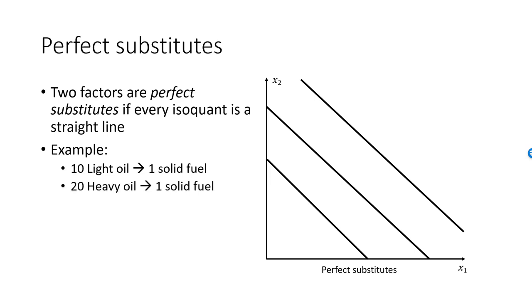Light oil and heavy oil are therefore two production factors that are perfect substitutes. Light oil and heavy oil are perfectly replaceable with each other in a 1 to 2 ratio.